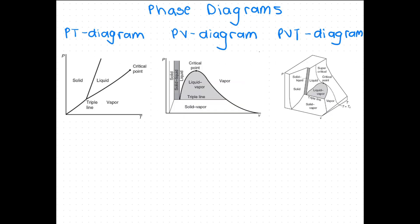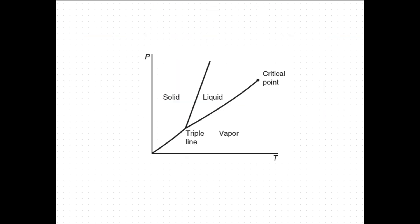Now let's look at phase diagrams to help us understand our processes. There are three commonly used diagrams: PT diagrams which is pressure temperature diagram, PV diagrams which is a pressure volume diagram, and PVT diagrams which is a pressure volume temperature diagram. Let's look at the PT diagram.